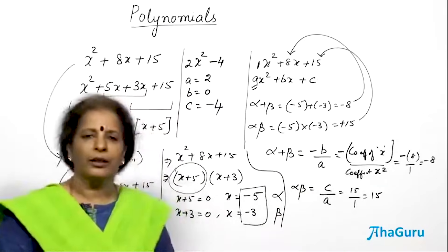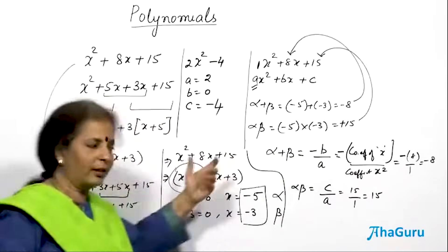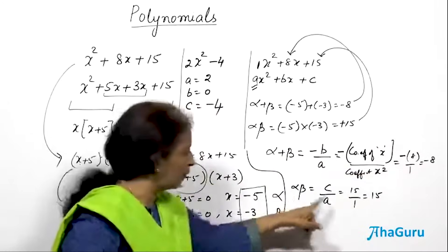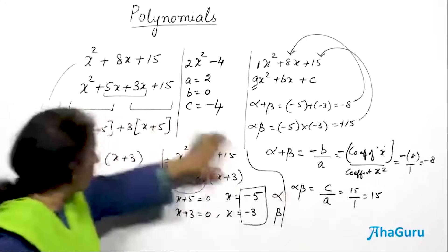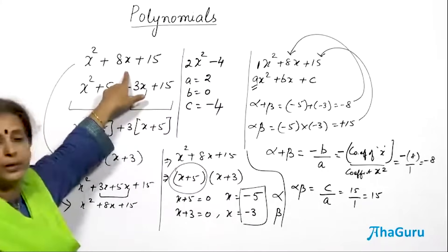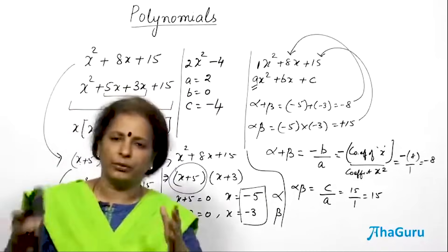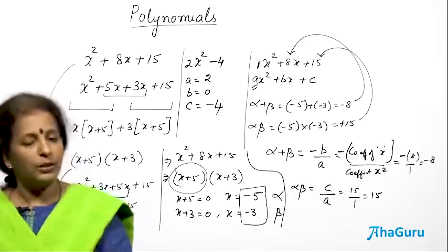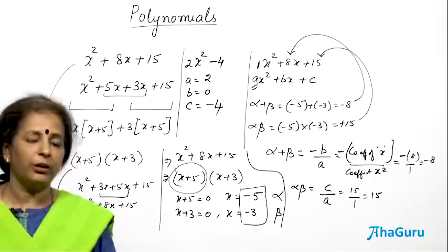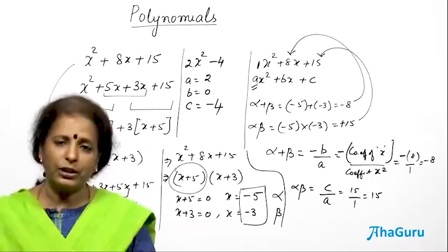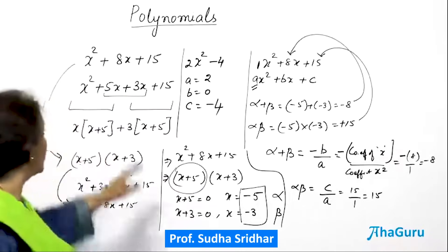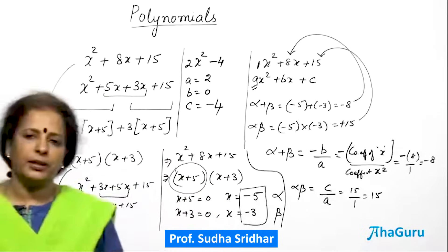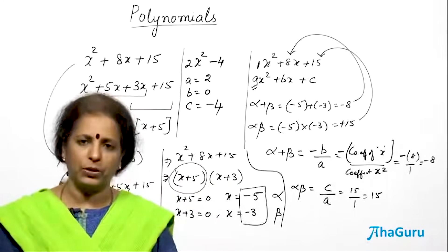From this, if I am given alpha + beta = -8 and alpha times beta = 15, I can go back and form the original equation. Both ways it works — either from the given polynomial I find the roots and their relationships, or if I know the relationships, I can write down the original polynomial. We will do some problems to understand how these alpha-beta relationships can be used.